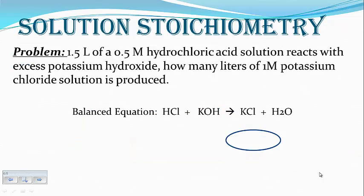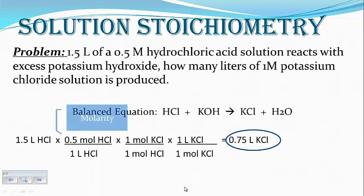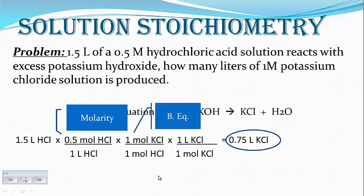Here's an example problem: we have 1.5 liters of a 0.5 molar hydrochloric acid solution which reacts with potassium hydroxide. How many liters of a 1 molar potassium chloride solution is produced? Write the equation out and balance it. Starting with liters — because we never start with molarity — cancel out units using the molarity of hydrochloric acid, then use the balanced equation to go from moles of hydrochloric acid to moles of potassium chloride, and then use the molarity of potassium chloride to get to liters of potassium chloride.